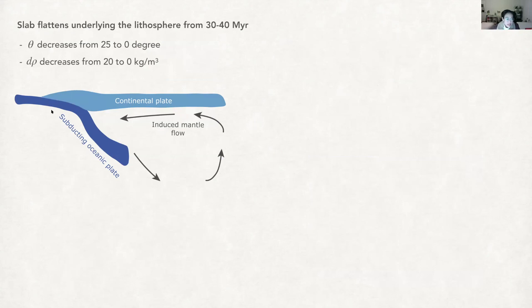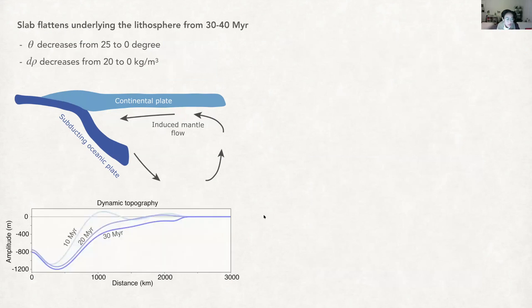So we run the model for another 10 million years and let the dip angle change from 25 degrees to zero. And then the dynamic topography due to this slab flattening shows a major rebound close to the subduction zone and additional subsidence in the far field.